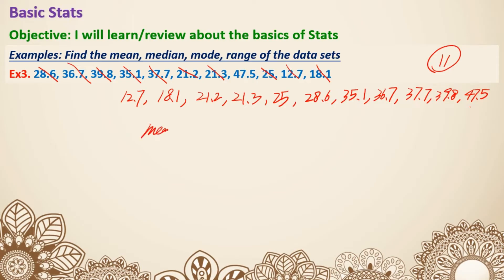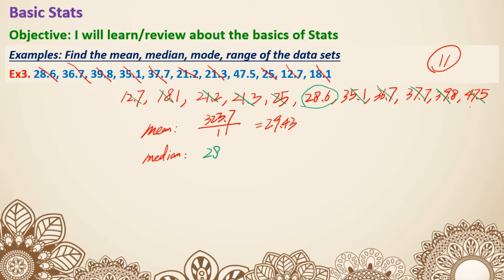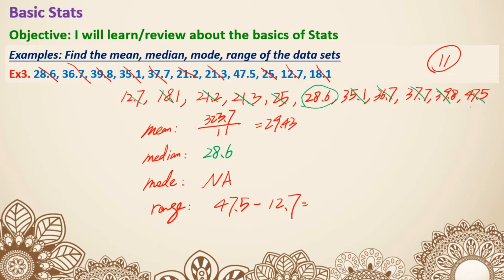For the mean, add all the numbers together to get 323.7, then divide by 11, giving a mean of 29.43. For the median with 11 numbers, remove from both ends until one number remains in the middle — the median is 28.6. For mode, every single number appeared only once, so we do not have a mode. For range, the biggest number 47.5 minus the smallest 12.7 gives a range of 34.8.